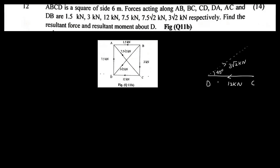We resolve these forces into the sine component and the cosine component. For a force at angle theta, the adjacent side gives F cos theta and the opposite side gives F sin theta. For the diagonal forces, we resolve using cos 45 and sin 45 — for example, 3√2 cos 45 and 3√2 sin 45.